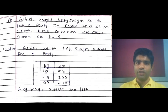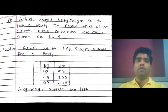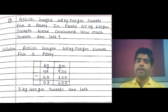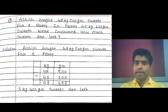Next example: Arshi bought 48 kg 500 grams of sweets for a party. At the party, 45 kg 100 grams of sweets were consumed. How much sweet is left? The given condition is: Arshi has 48 kg 500 grams of sweets for the party. In the party, 45 kg 100 grams were consumed. Arrange in column form — write 48 on kilogram and 500 on gram side, then 45 on kilogram and 100 on gram side.